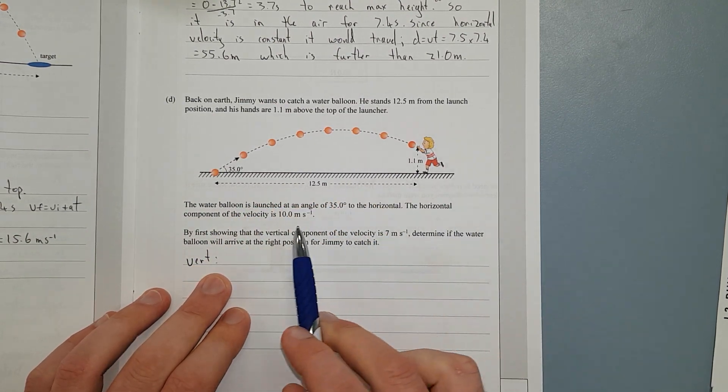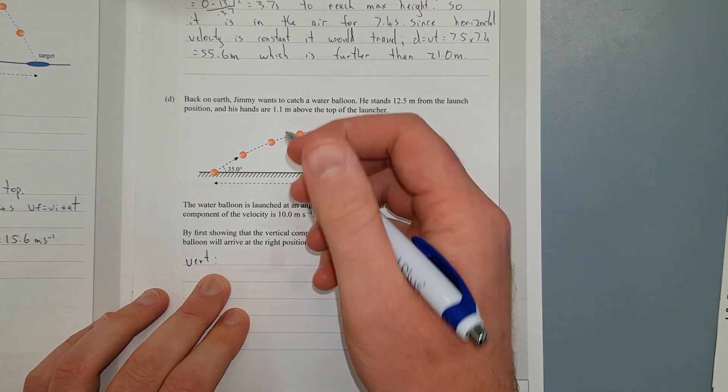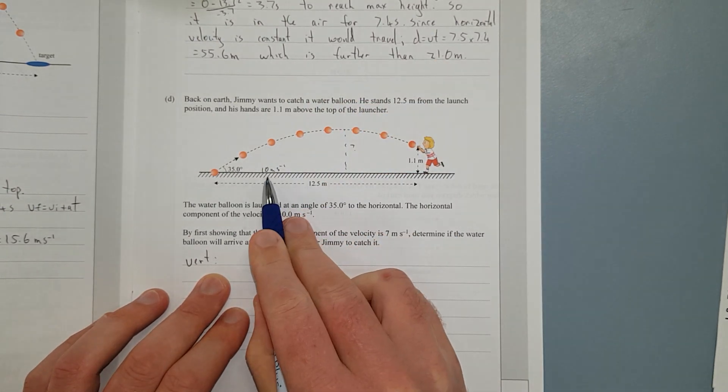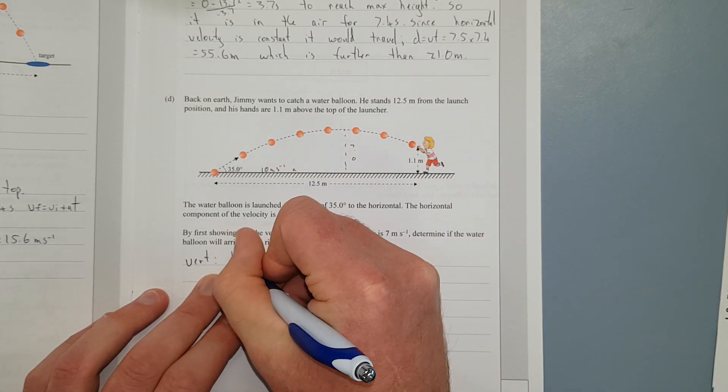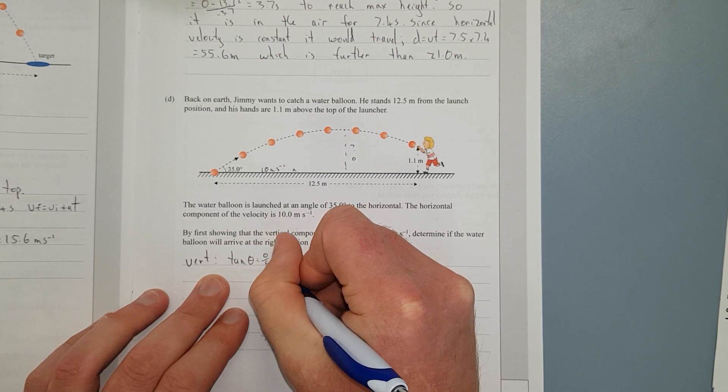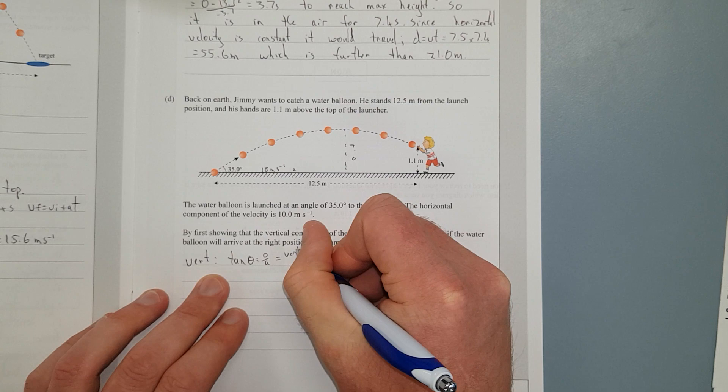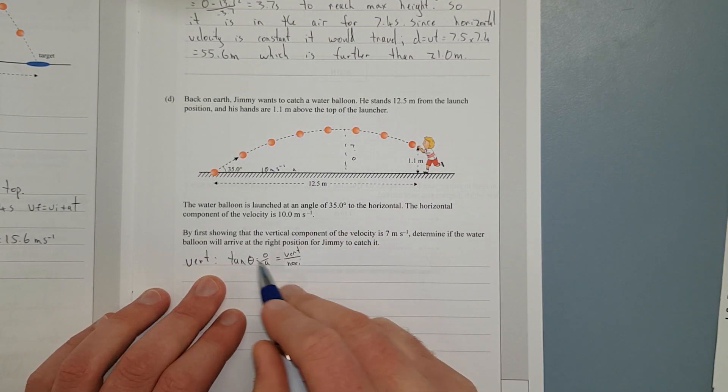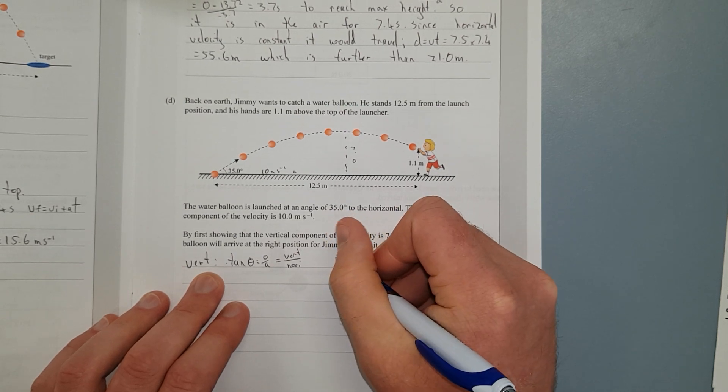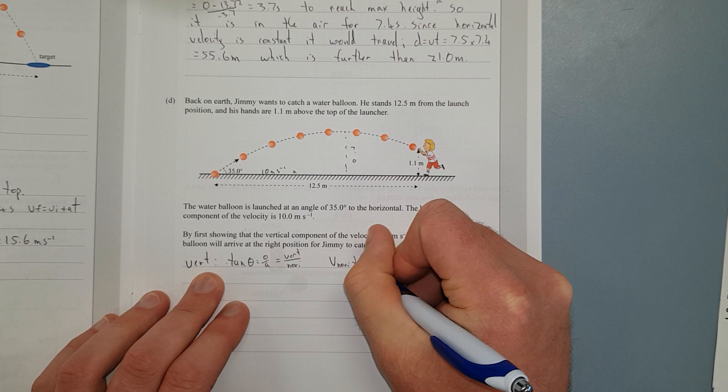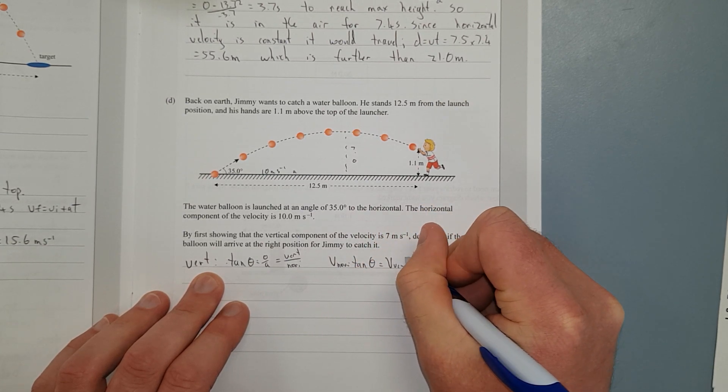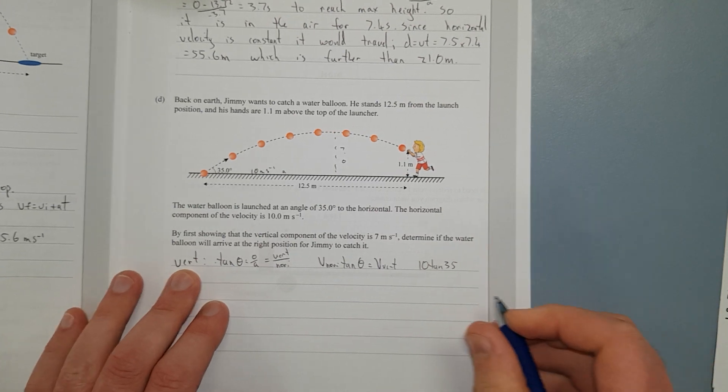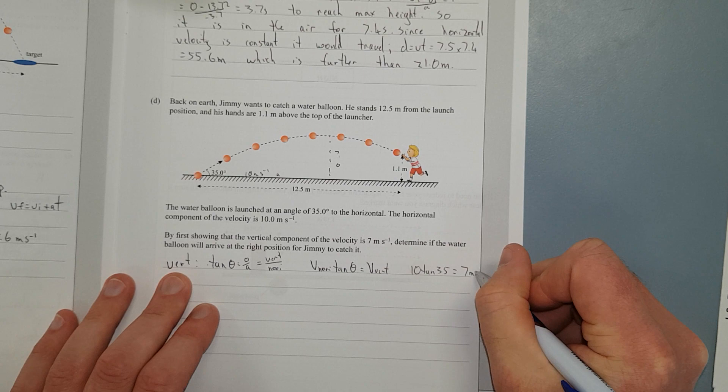We have the horizontal component. That is 10. So that is this component down here, 10 metres per second. We're trying to find this component here, question mark. We have the adjacent. That is the opposite. We'll write tan theta equals O over A, which is going to be equal to the vertical component of velocity divided by the horizontal. In other words, if you times both sides by the horizontal velocity, we get the velocity horizontal times tan theta is going to give us the velocity vertical. In other words, 10 tan 35, because that's the angle, is going to give us 7 metres per second.